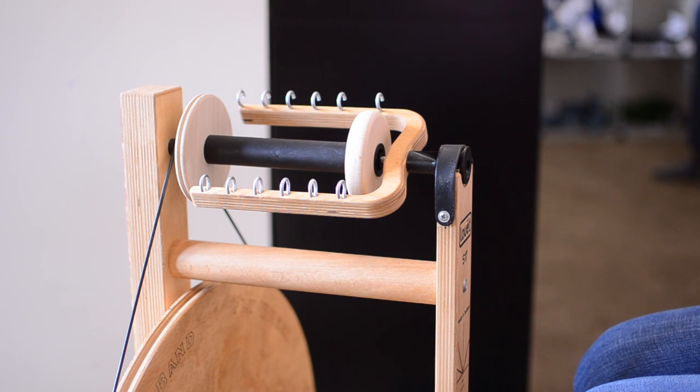Hi everybody, it's Sasha, and today I'm going to be giving you some tips and tricks for using the Louet S17. It is a bobbin lead wheel, which means that the tension works a little bit differently than a scotch tensioner or a double drive wheel. So that's what we'll be focusing on.